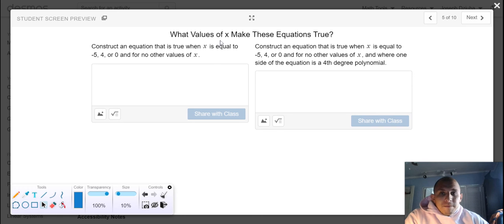After you're done doing that, I'd like for you to construct your own equation that is true when x is equal to negative five, four, or zero, and for no other values of x. So, these are the three factors, or zeros, of the polynomial.